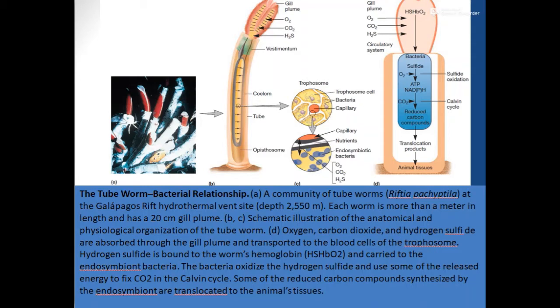The giant red gutless tube worm, which you can see here, grows in these hydrothermal vents in large numbers. They provide an example of a mutualism between bacteria — specifically chemolithotrophic bacterial endosymbionts — which grow within these tube worms.